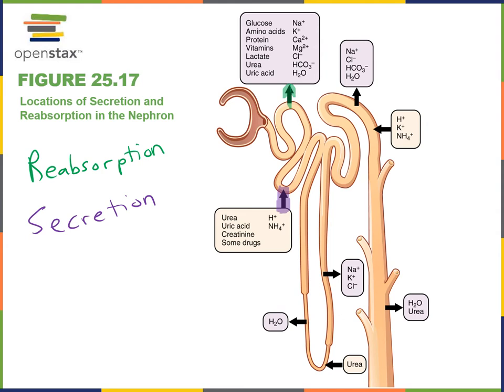Creatinine and some drugs are also secreted, as well as hydrogen ions. Secretion of hydrogen ions is a mechanism to help maintain the pH balance of the body. If the blood pH is too low, hydrogen ions can be secreted in order to help elevate the blood pH as a long-term pH balance mechanism.